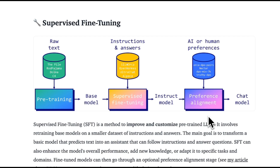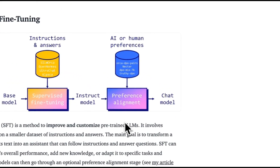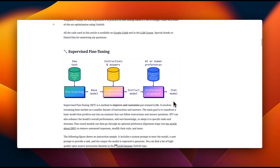The third stage is preference alignment. If you have heard about RLHF or algorithms like DPO, in this stage we want the model to learn what the user prefers in terms of responses, or we want to align the model to a certain set of principles. This is an optional step, but a lot of API providers include it, and the result is going to be a chat model.